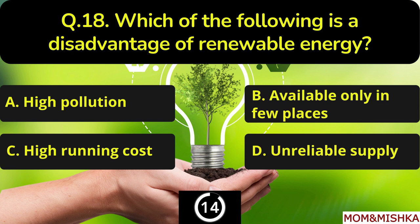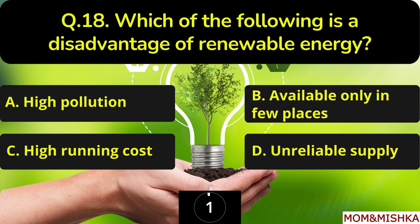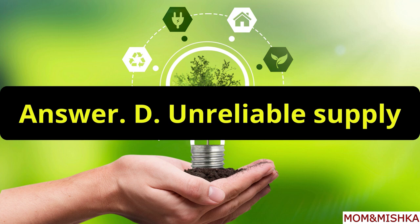Which of the following is a disadvantage of renewable energy? The answer is Option D, Unreliable supply.